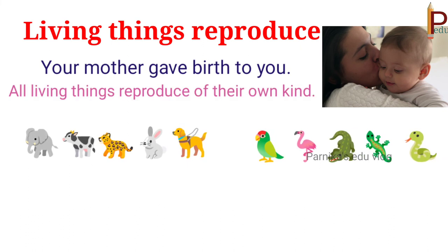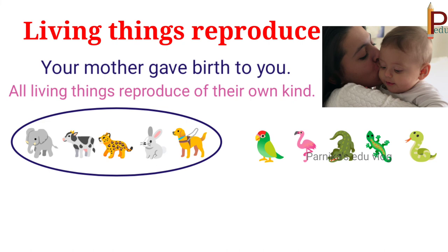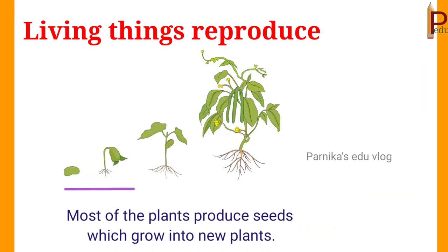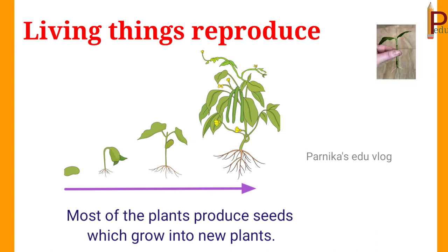Living things reproduce. Your mother gave birth to you — like that, all living things reproduce their own kind. Some animals give birth to babies and some animals lay eggs. Most plants produce seeds which grow into new plants. Some plants produce new plants from their stems, roots, or leaves.